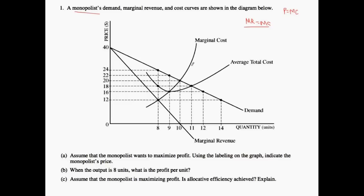If you see marginal cost here and marginal revenue is here, the intersection happens at this point. They would set a price at 24, since they can send that markup to the consumer, and therefore we have a price of 24. So P equals 24 for part A — that's just looking at where marginal revenue intersects marginal cost and then going to the corresponding location on the vertical axis.